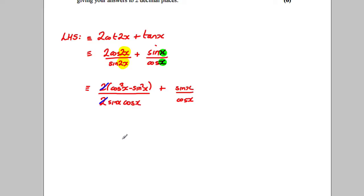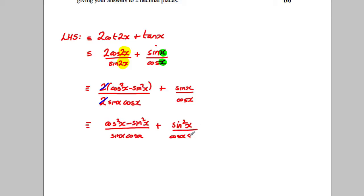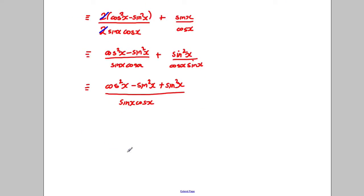At this point a factor of 2 cancels top and bottom. We have trigonometric fractions, so to add them I need a common denominator. I'll multiply the second term by sin(x) on top and bottom, giving: [cos²(x) − sin²(x)] over sin(x)cos(x), plus sin²(x) over cos(x)sin(x). Now the denominators match, so I can combine the numerators: cos²(x) − sin²(x) + sin²(x), all over sin(x)cos(x).